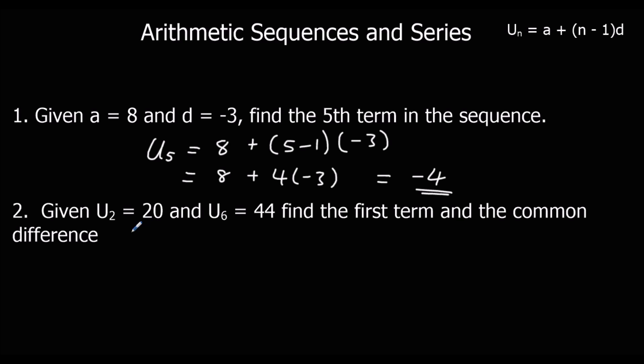Given u2, second term is 20. And u6, the sixth term, is 44. We need to find a and d. 20 is the second term. 20 is a, plus n minus 1. So 2 minus 1, which is 1, d. And 44 is a, plus n minus 1. So 6 minus 1, 5, lots of the difference.